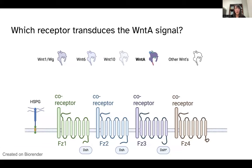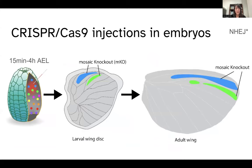To test and identify the receptor that transduces the WNT-A signal, we used CRISPR-Cas9 injections. We collect butterfly embryos about 15 minutes to four hours after egg laying and inject a mix of Cas9 nuclease and guide RNAs. If you inject early, the chances of hitting a larger population of cells are higher. The cells that acquire this mix have the gene knocked out via non-homologous end joining. These clones persist during development and show up in the adult wing as patches of cells with mosaic knockout identities.